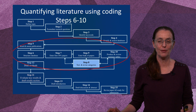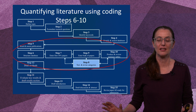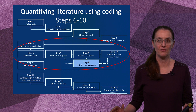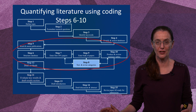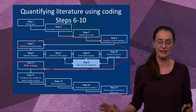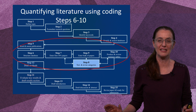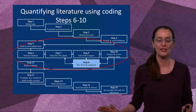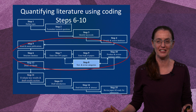In that paper we outline those methods that you use — those 15 steps: five for systematically searching for the literature, five for coding and five for writing the paper. What I'm going to do now is talk in some more detail about some neat little additional strategies for doing those steps six to ten, where you're going to quantify the literature using coding criteria.